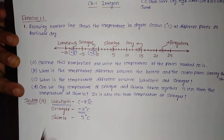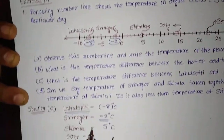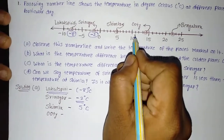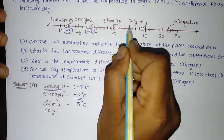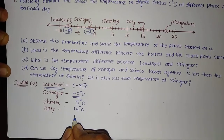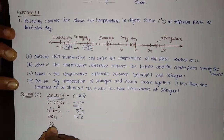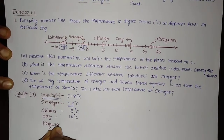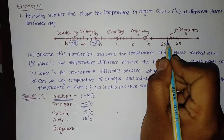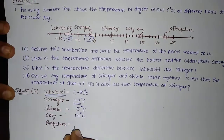Next is Uti. What is the temperature of Uti? The temperature of Uti is given here — you can see on the number line it is at 10 and then 11, 12, 13, and 14. So the temperature of Uti is plus 14 degree Celsius. Next, that is Bengaluru. What is the temperature in Bengaluru? Here it is 20, and Bengaluru is at 21 and 22. So the temperature of Bengaluru is 22 degree Celsius.